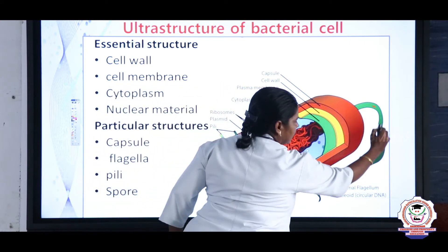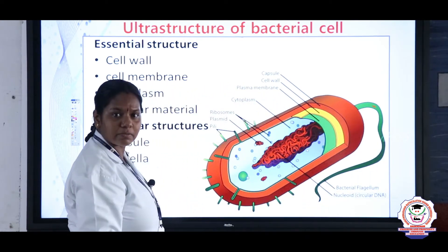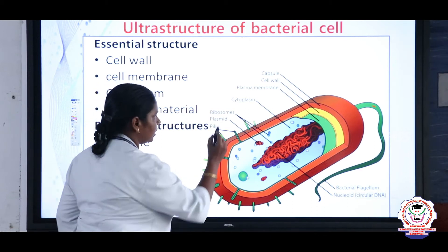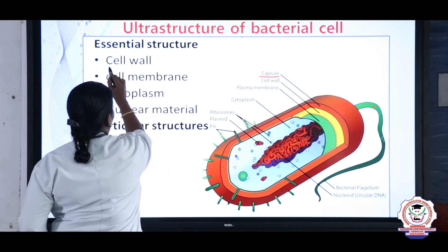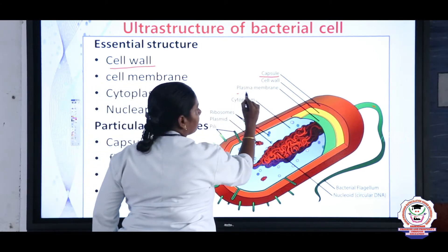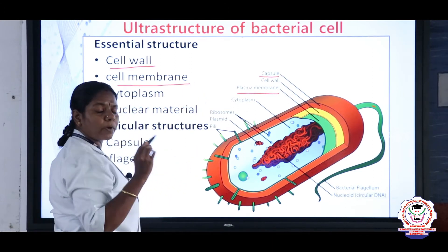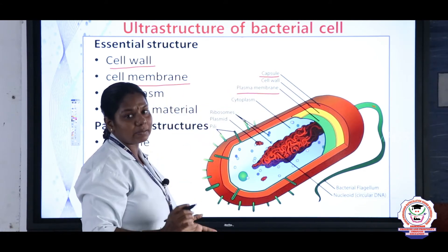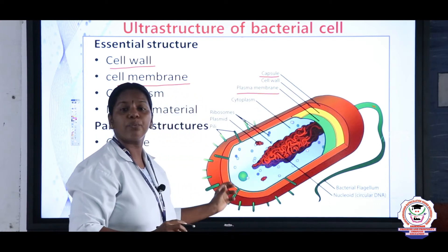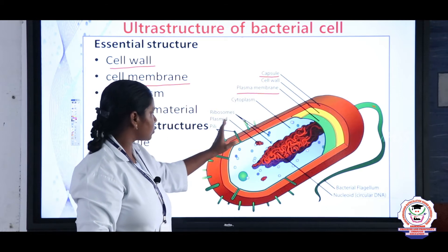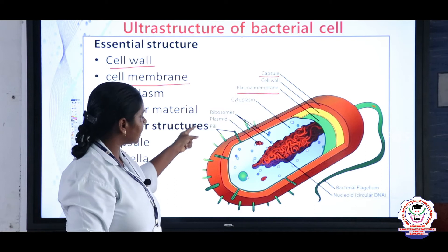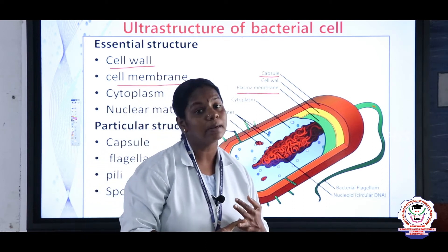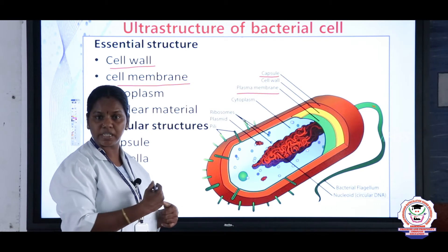Looking at the structure of a bacterial cell: the flagellum helps in movement. The bacterium has three covering layers — capsule, cell wall, and plasma membrane. Inside, the cytoplasm contains cell inclusions and ribosomes, which function in protein synthesis. Bacteria also have two types of genetic material: the bacterial chromosome and the plasmid.